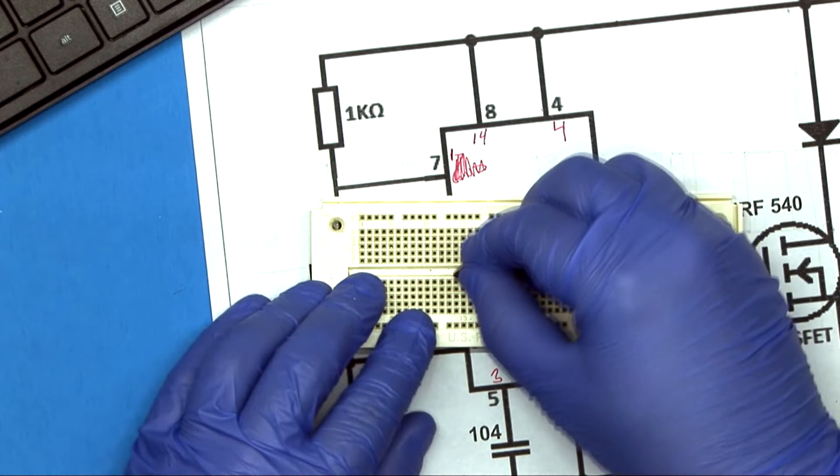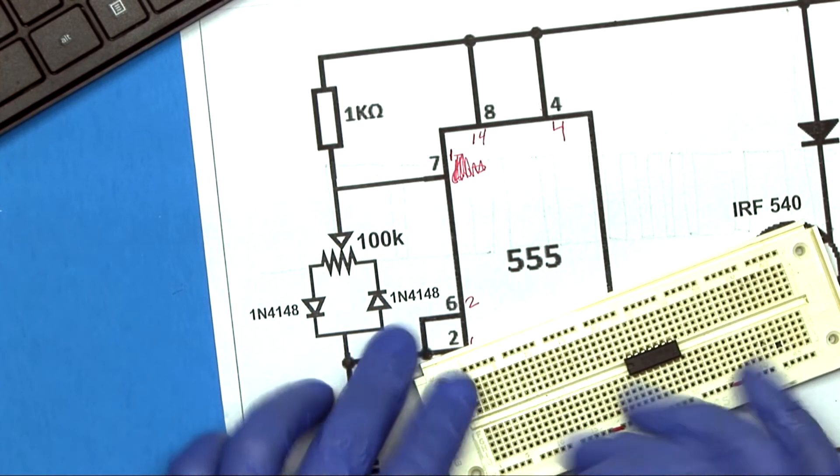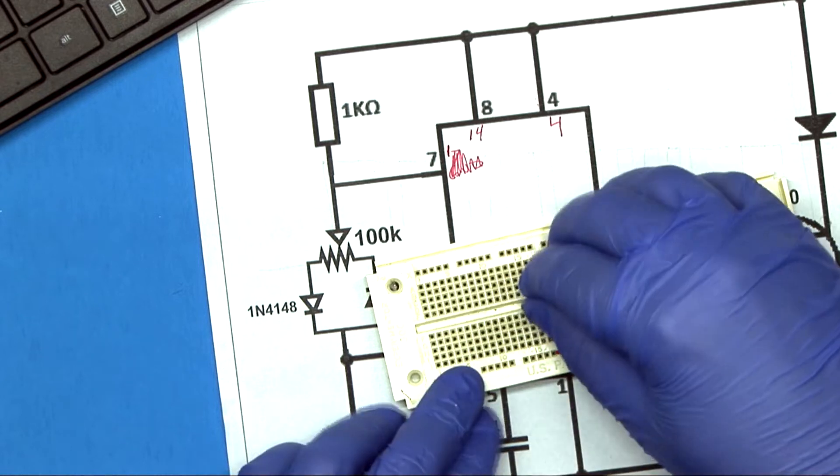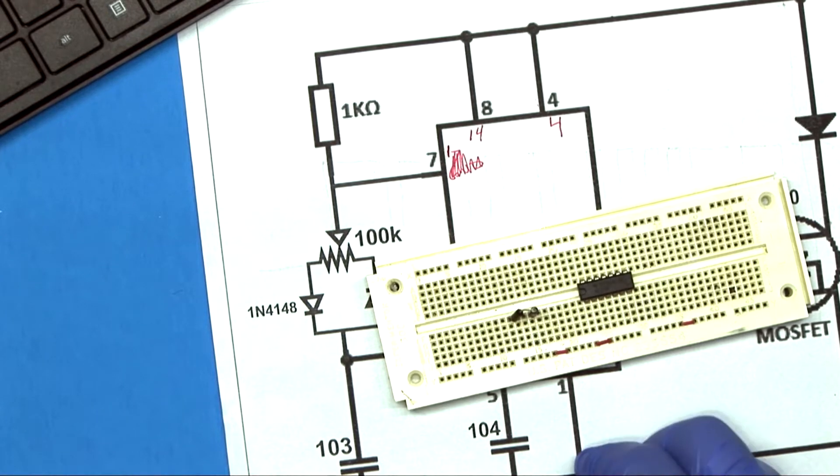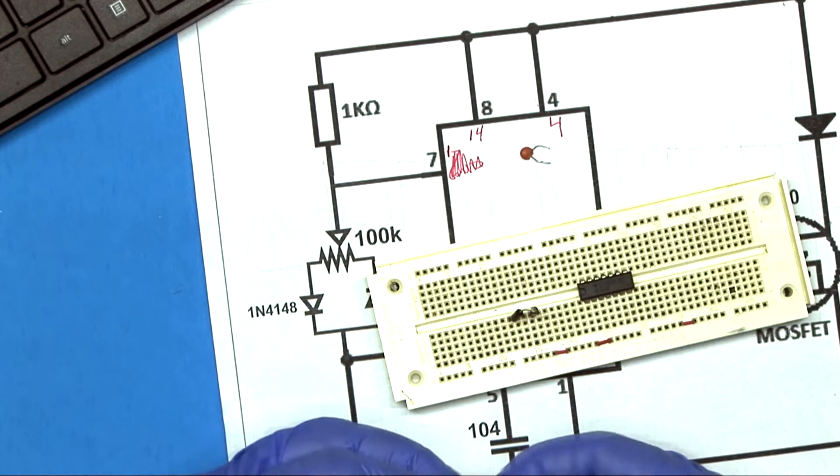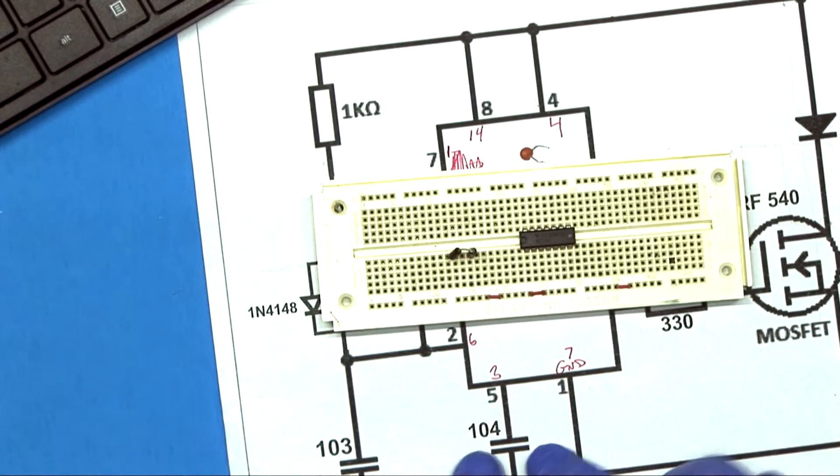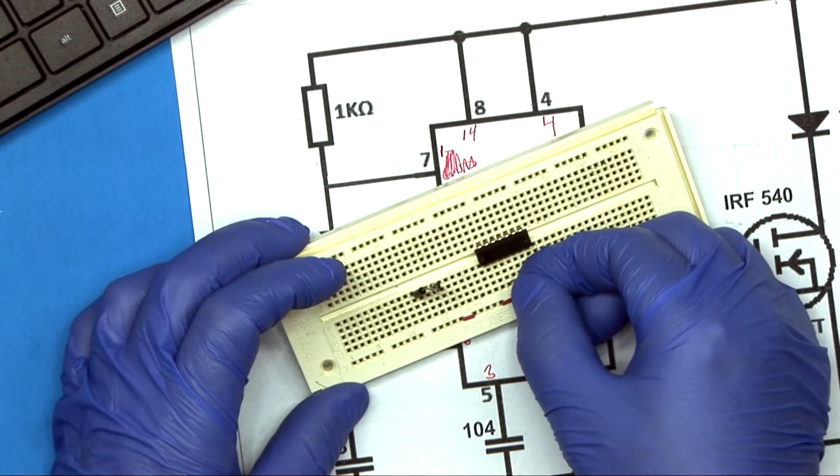So I have the two rectifier diodes here. They're recommending, on this schematic, they want 1N4148s. I don't even know what these are. These are, I think, probably 1N4001s. Shouldn't matter too much.